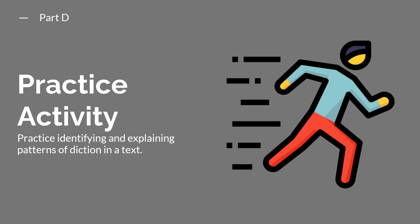Let's go ahead and pause one more time to complete Part D of the practice activity, where you're going to identify and explain patterns of diction within the text. When you're done, don't forget to unpause the video to finish up the lesson.